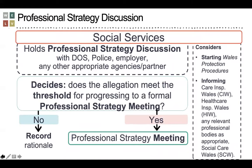Social services will then convene a professional strategy discussion, which may include the designated officer for safeguarding, police, the employer, and any other appropriate agency or partner. The procedures provide detail as to who should be included in this discussion. Consideration will also be given to whether Sections 2 to 4 of the protection procedures need to be commenced, and whether regulatory bodies need to be informed.